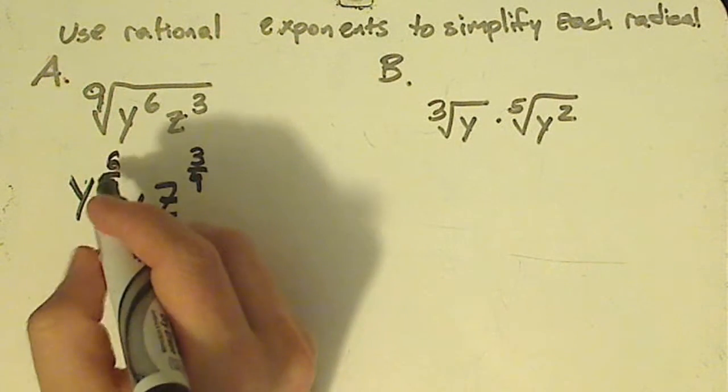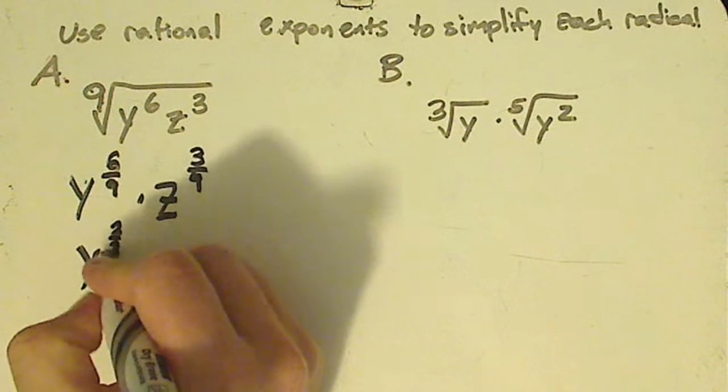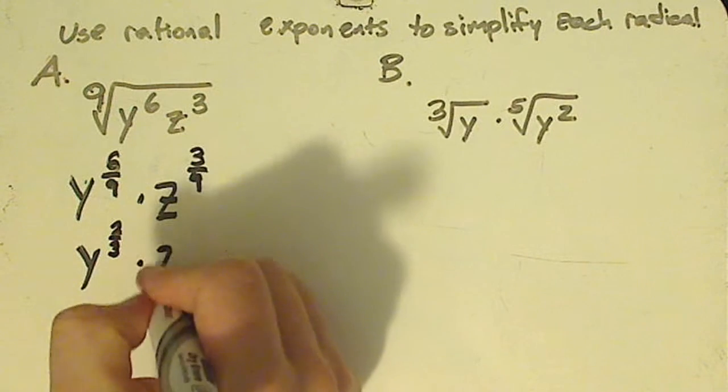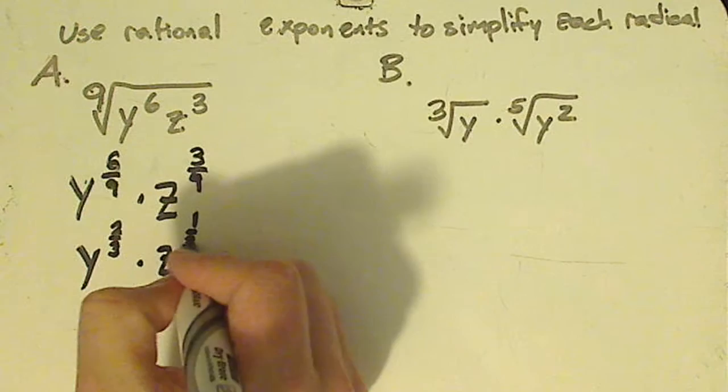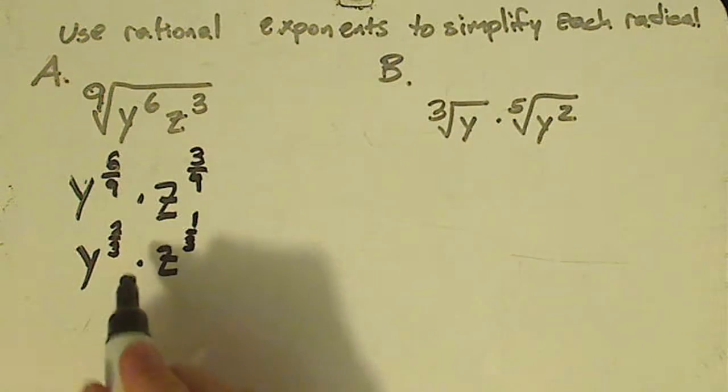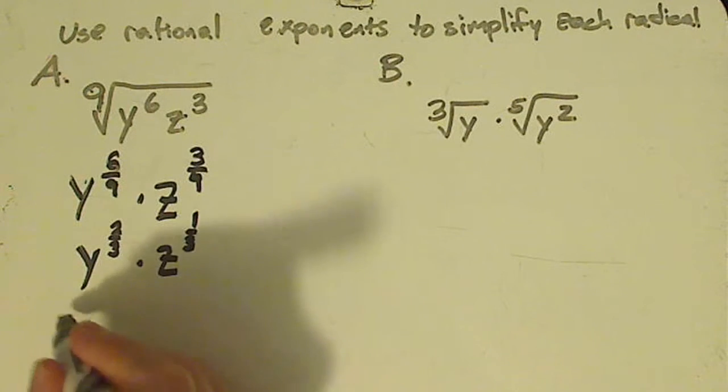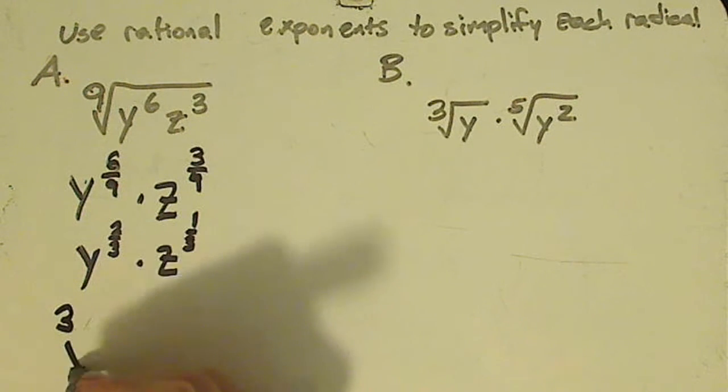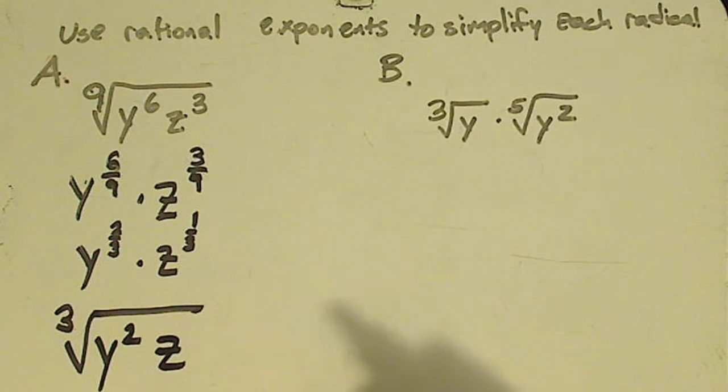Now next you simplify it. So six over nine, three goes into both of those. So it would be two thirds. You have z. That would be three ninths, which is one third. Now notice that both of these are thirds. So I can rewrite it as the cube root of y squared z.